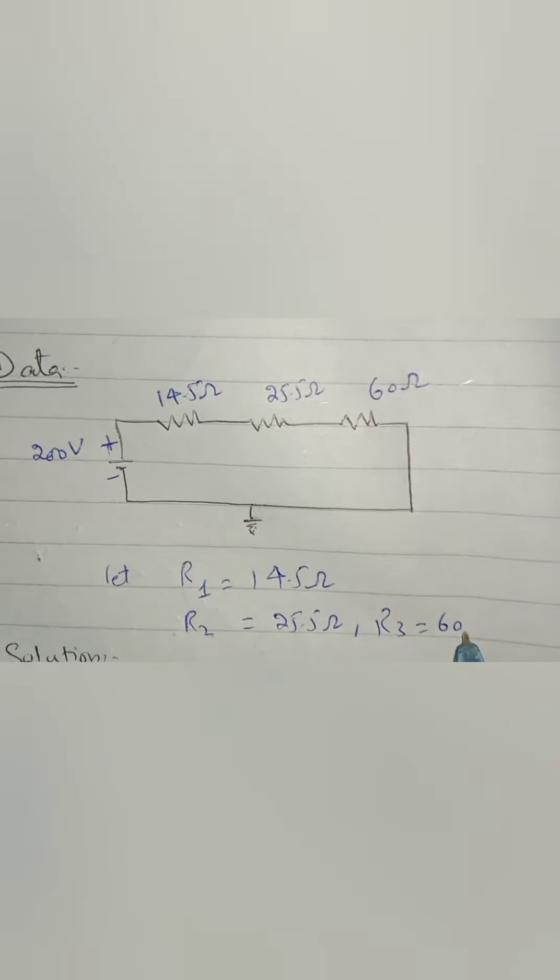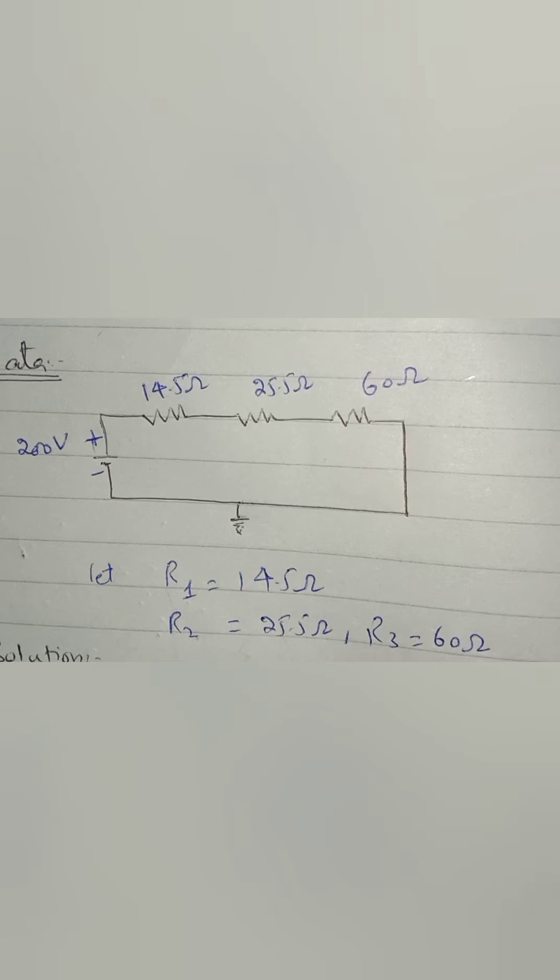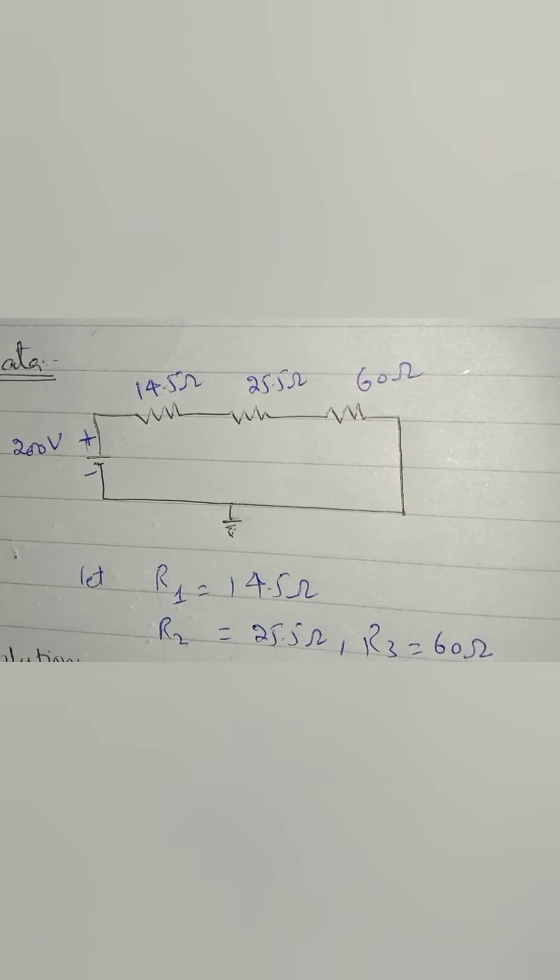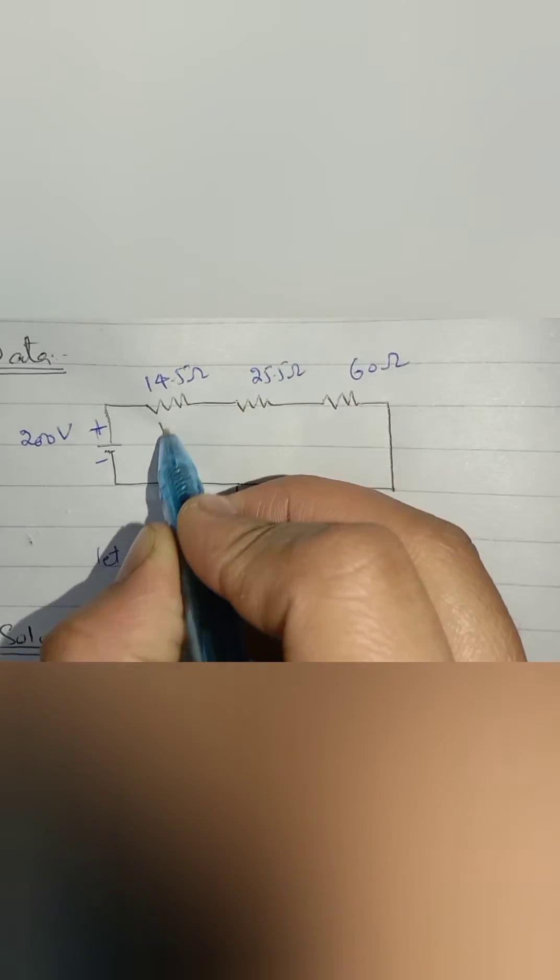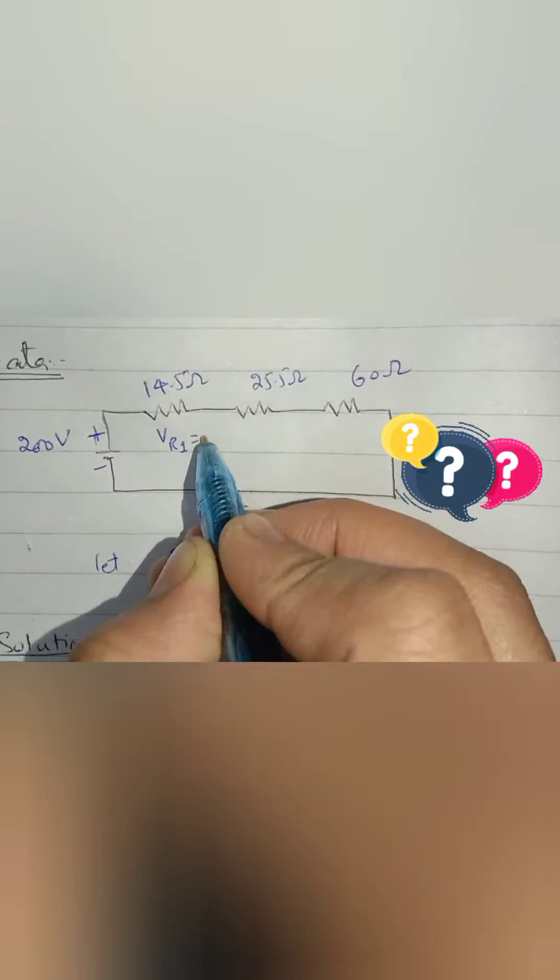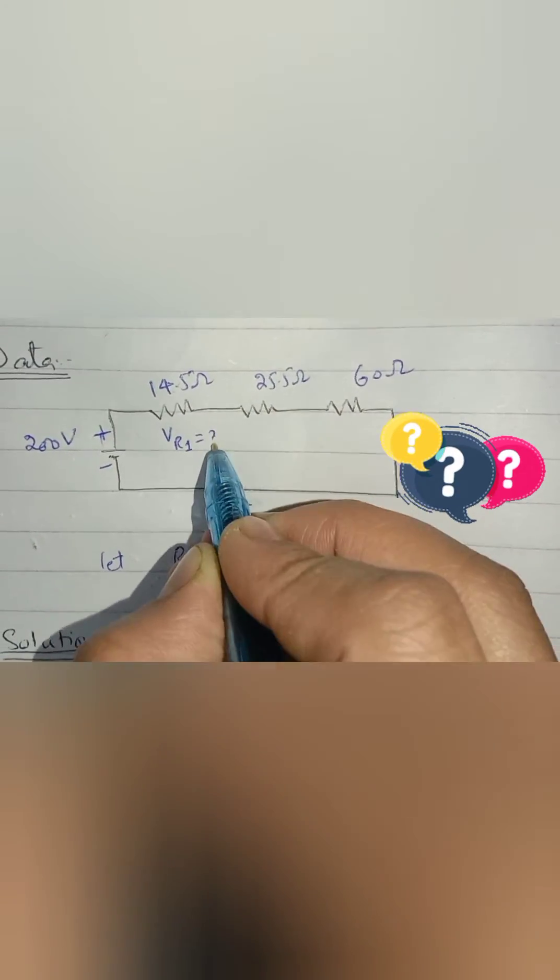Now, what we have to find is the voltage across R1. This is our question. First of all, we have to find the R equivalent of the circuit.